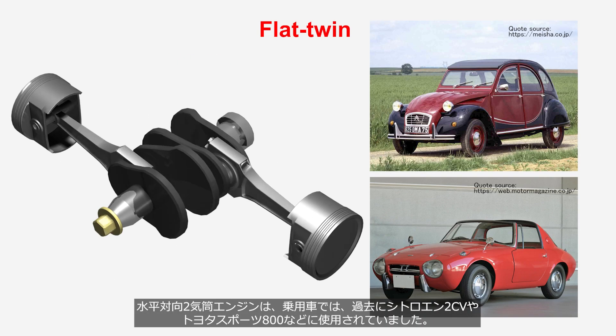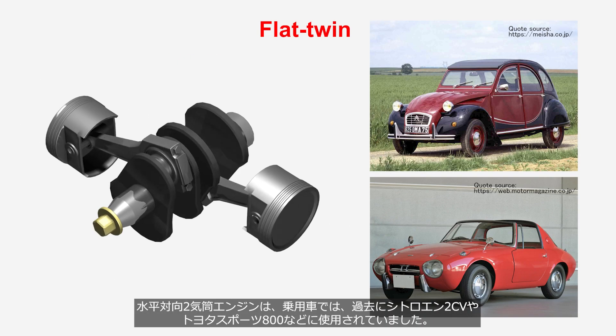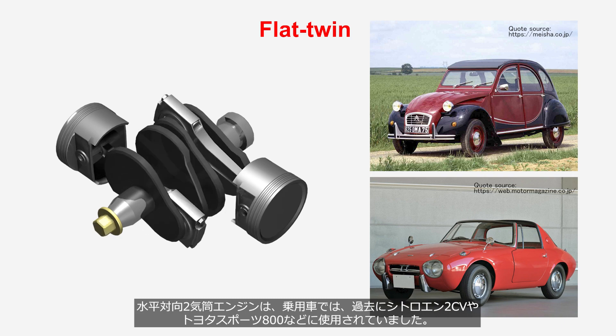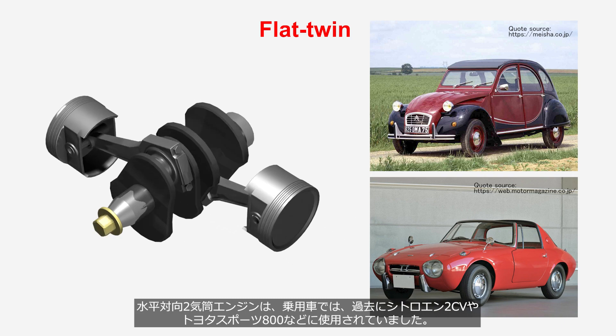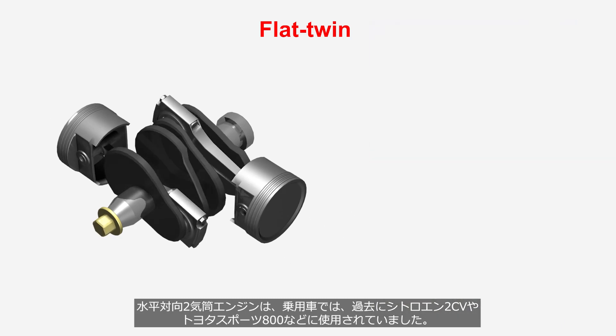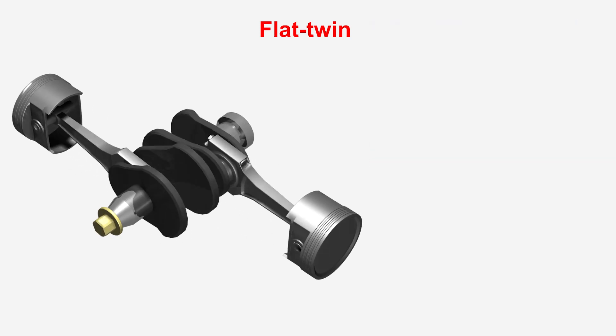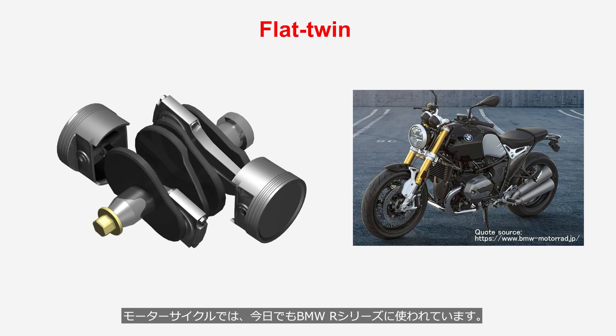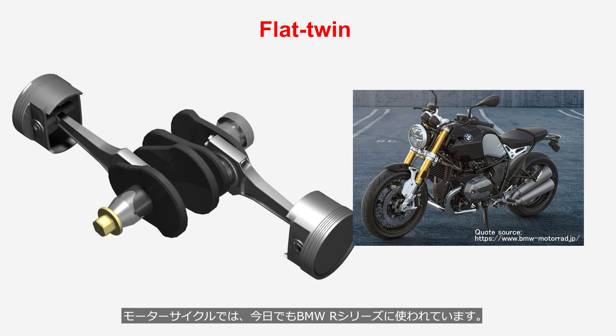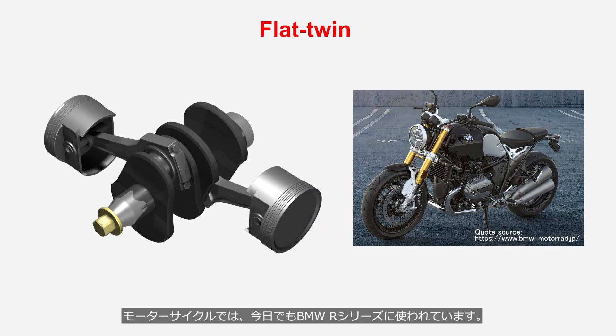Flat twin engines were used in passenger cars in the past, such as in the Citroën 2CV and Toyota Sports 800. In motorcycles, even today, they are used in the BMW R series.